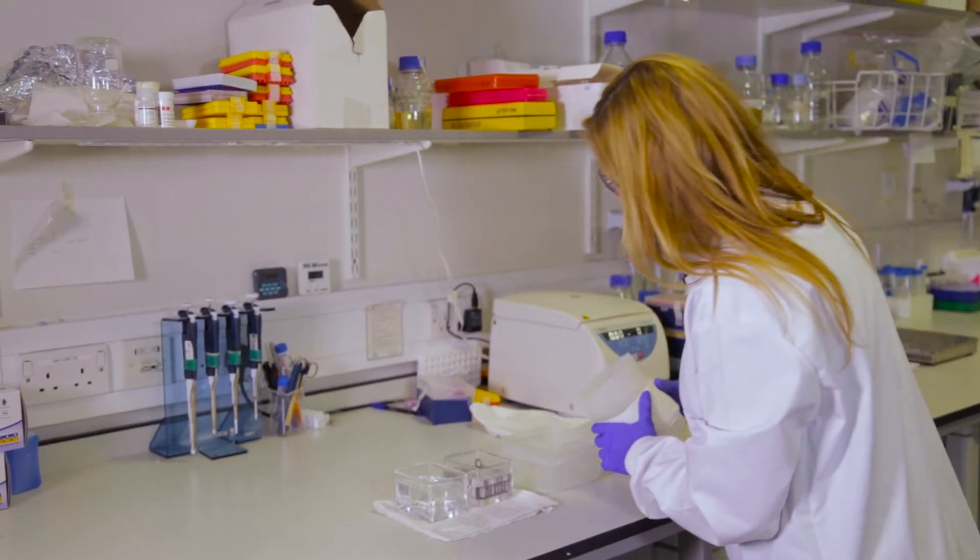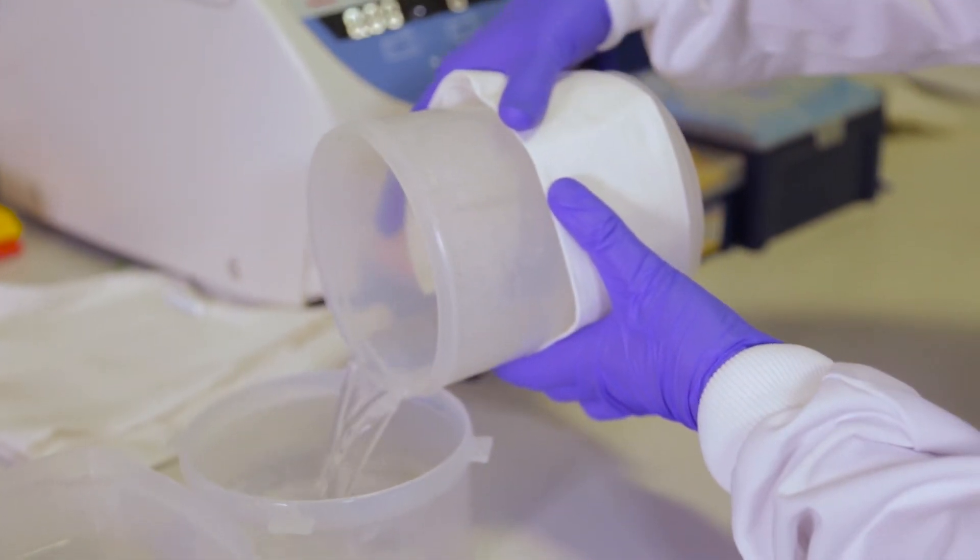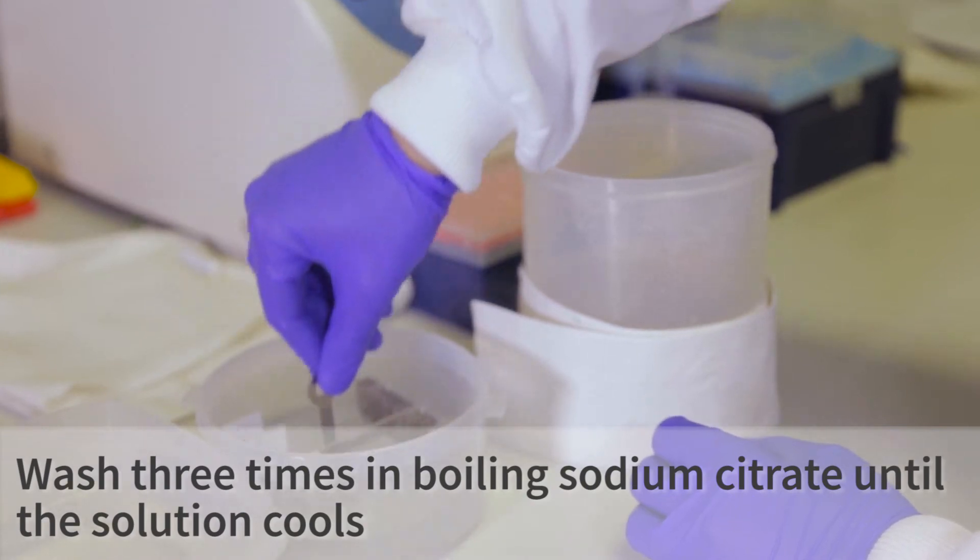The next step is antigen retrieval. For this, we use boiling sodium citrate. After your final PBS wash, you can move the slides into a container of boiling sodium citrate. We do this three times.